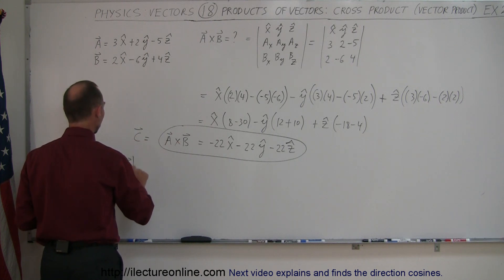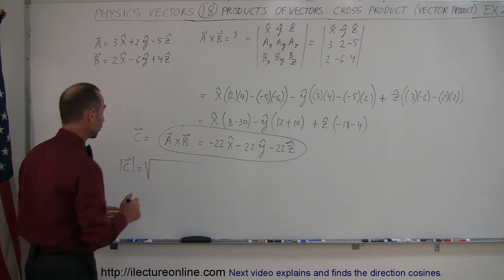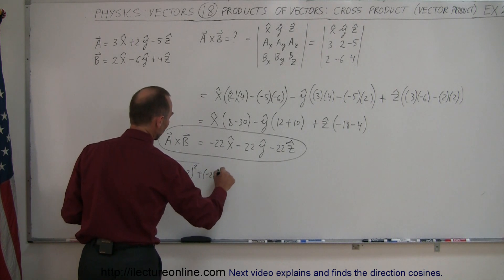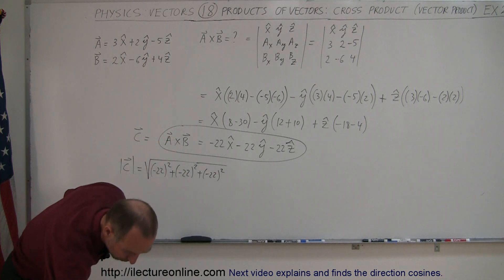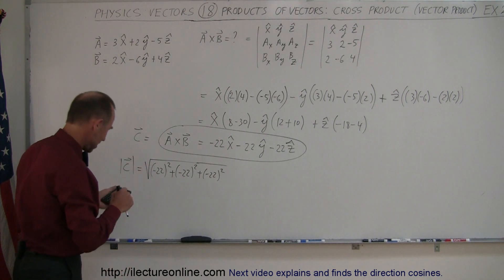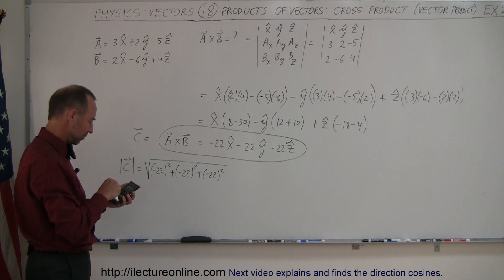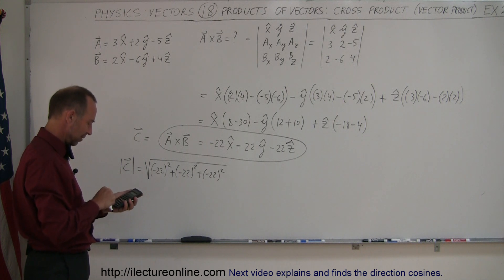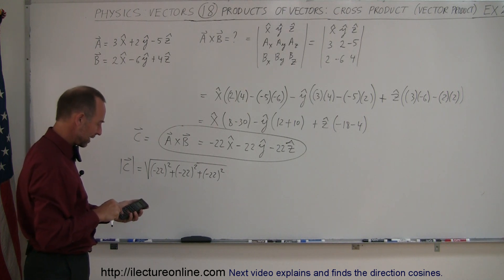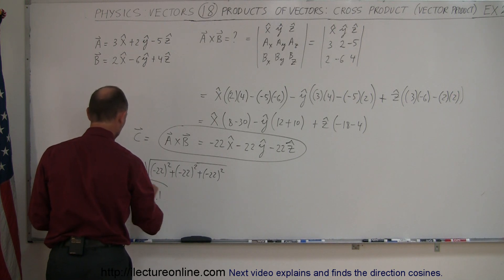Now, what is the magnitude of that vector? Let's call this the C vector. The magnitude will simply be the square root of the sum of the squares of the individual components: minus twenty-two squared, plus minus twenty-two squared, plus minus twenty-two squared. That's twenty-two squared times three, and taking the square root gives us thirty-eight point one. So the magnitude of that vector is thirty-eight point one.